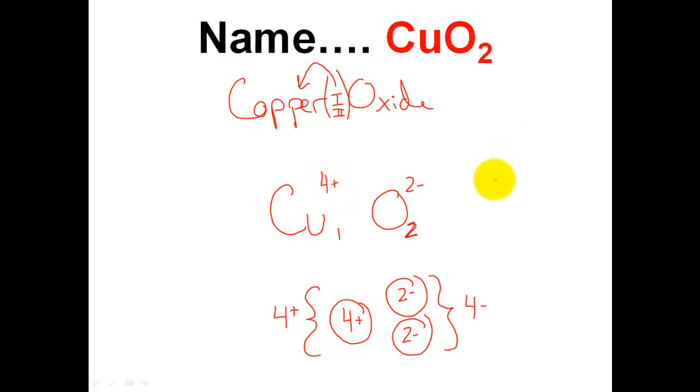So how do I write this finally? Finally, I finally write this as copper, parentheses in Roman numerals, four, oxide. That tells me that copper has a four plus charge.